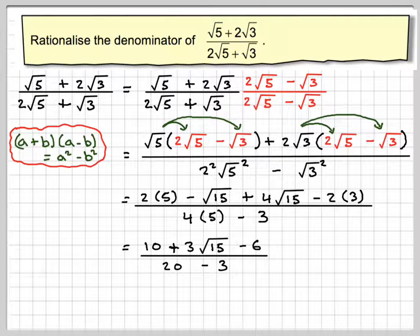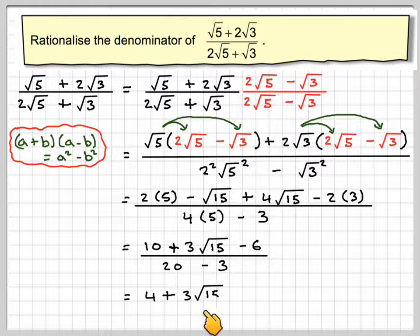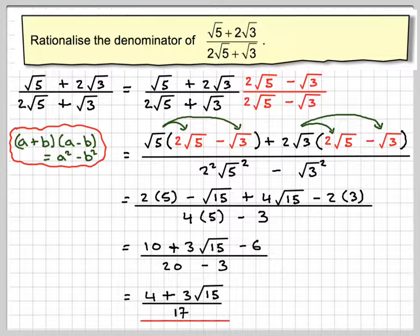10 minus 6 is going to give me 4. So we're going to have 4 plus 3 root 15 on the top, and 20 minus 3 is 17. So we end up with a final answer of 4 plus 3 root 15 divided by 17.